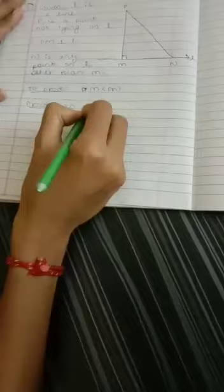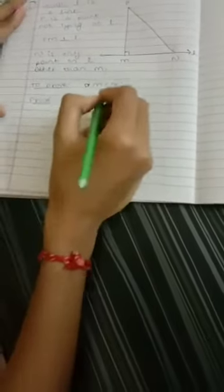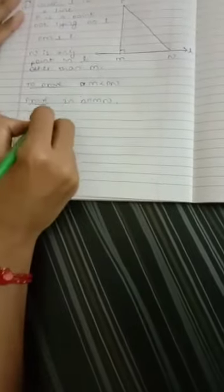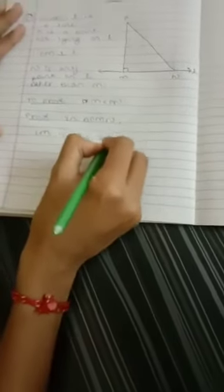Proof: we will take triangle PMN. In triangle PMN, angle M is the right angle.